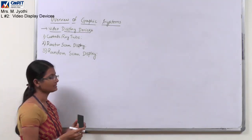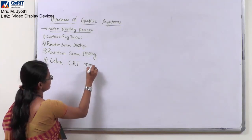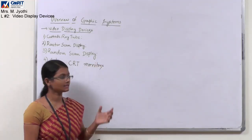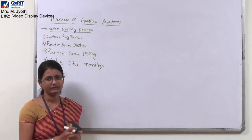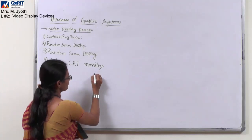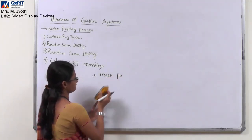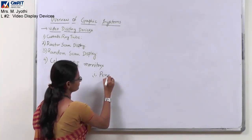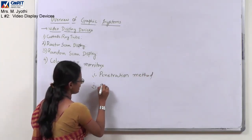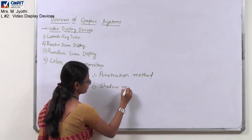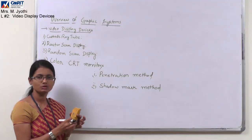The next type of video display device is color CRT monitors. In color CRT monitors, the CRT generates pictures of different colors. There are two methods for doing this: the first method is the mask penetration method, and the second one is the shadow mask method. Any one of these two techniques can be used to generate color images.